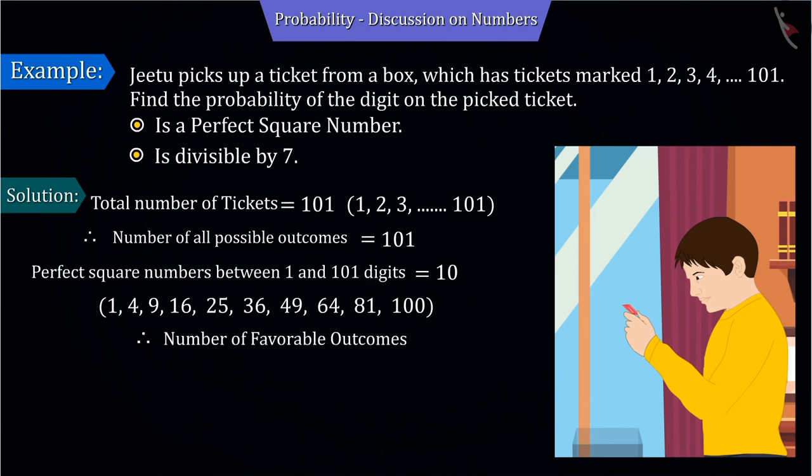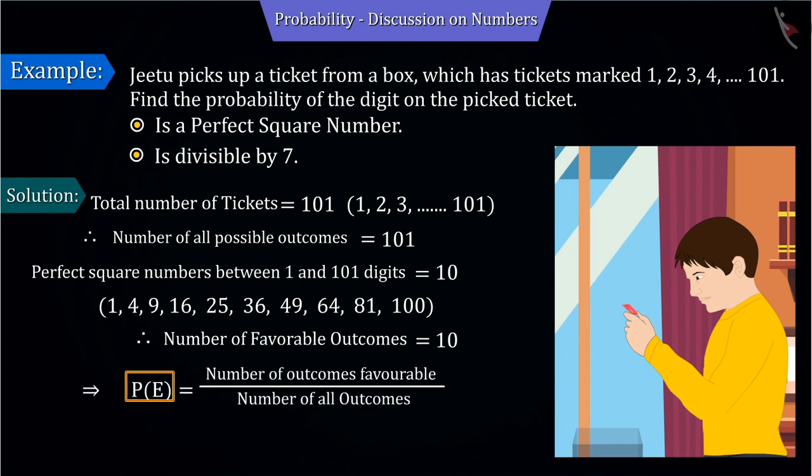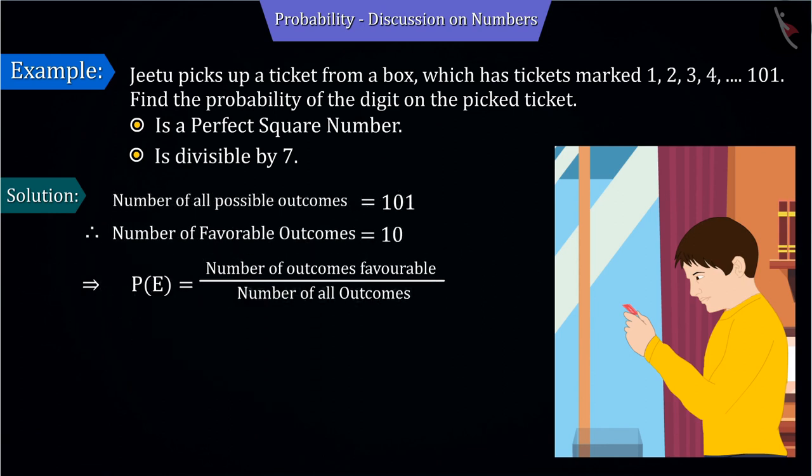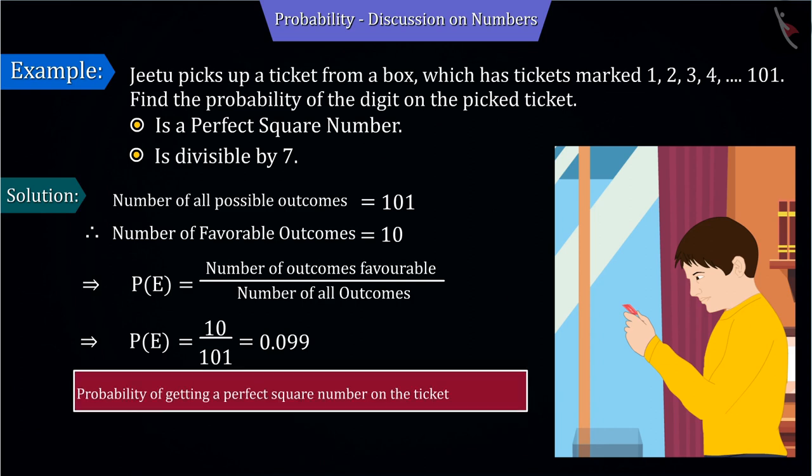That is, the number of results favourable to the event is 10. Let's substitute the values of the total possible outcomes and the number of results favourable to the event in the probability formula. On solving, we get 0.099. Therefore, we can say that the probability of having a perfect square number is 0.099.